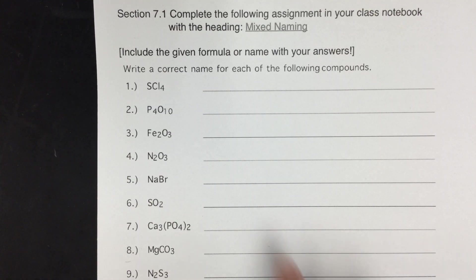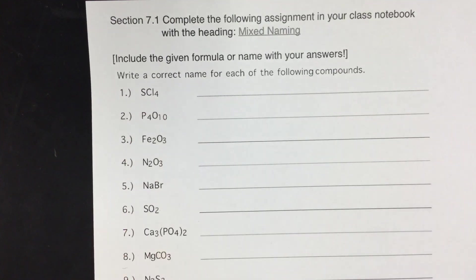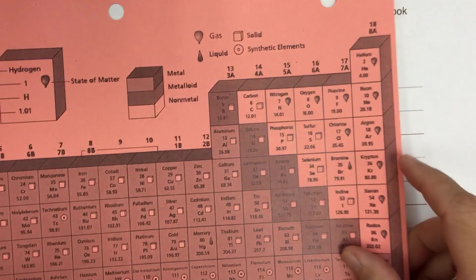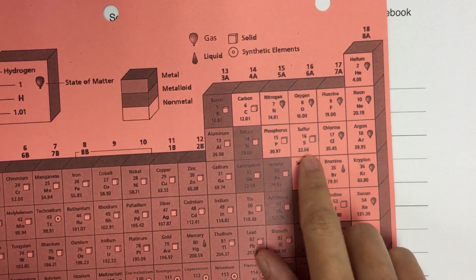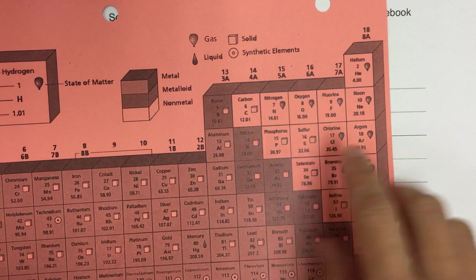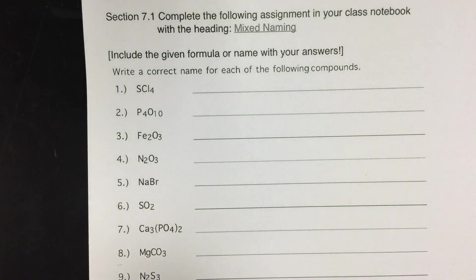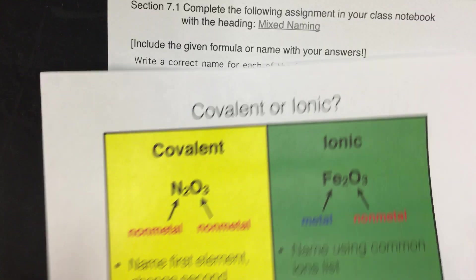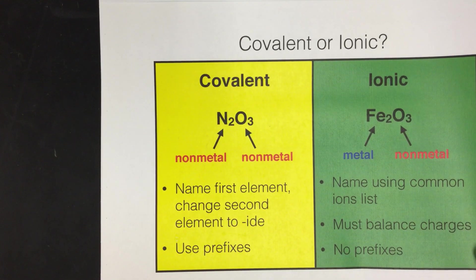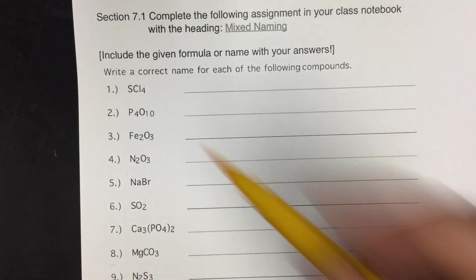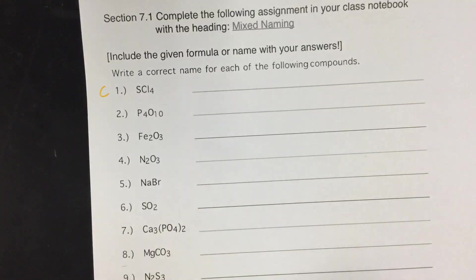So for number one, it's sulfur and chlorine. So if we look on the periodic table, sulfur is here and chlorine is here. They're both in the non-metals section. They're both non-metals, which means that this would be a covalent compound, right? Because covalent is when we have two non-metals. So I'm going to put a C here for covalent.